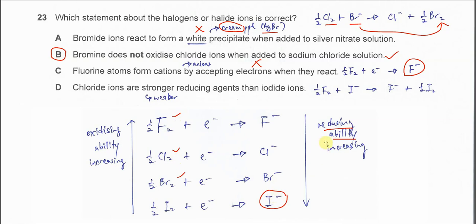So this is the reducing ability. Means if we compare the chloride and iodide now, chloride is a weaker reducing agent. Because chloride cannot reduce bromine but iodide can reduce bromine. Okay, that's the reducing ability. So therefore this statement is wrong. Chloride is actually a weaker reducing agent. Okay, compared to the iodide.